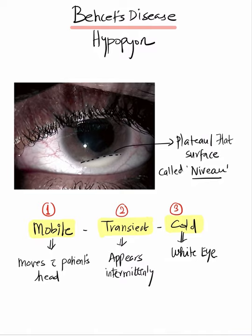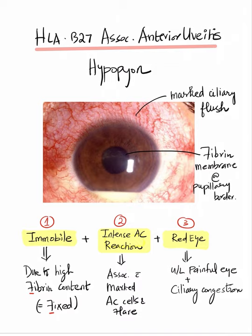One of the differential diagnoses for hypopyon uveitis is Behçet's disease, which is characterized by a hypopyon that is mobile — meaning it moves with the patient's head — transient, meaning it appears only intermittently, and it is a cold hypopyon, occurring in a relatively white eye. As you can appreciate, the typical plateau or flat surface of the hypopyon in Behçet's is what we call the Niveau.